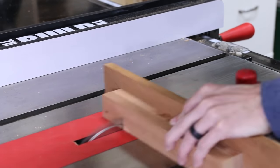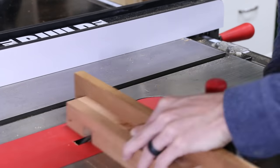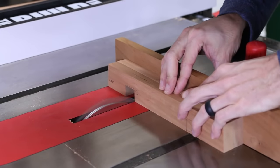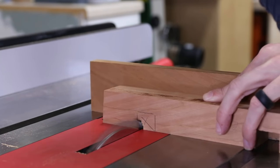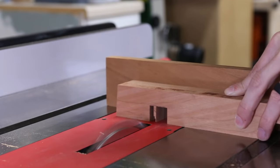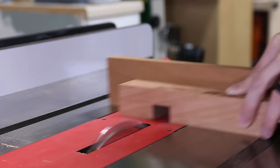This is another spot where you'll want to take your time and sneak up on your line and the fit. I got close to the lines, then I made a couple test fits with the stretchers and then I made sure that I could get it as tight as possible by sneaking up on that cut. I repeated the same steps on the other side to get both cutouts made.